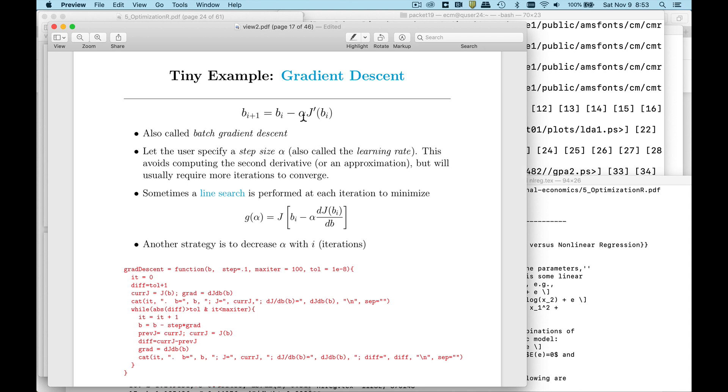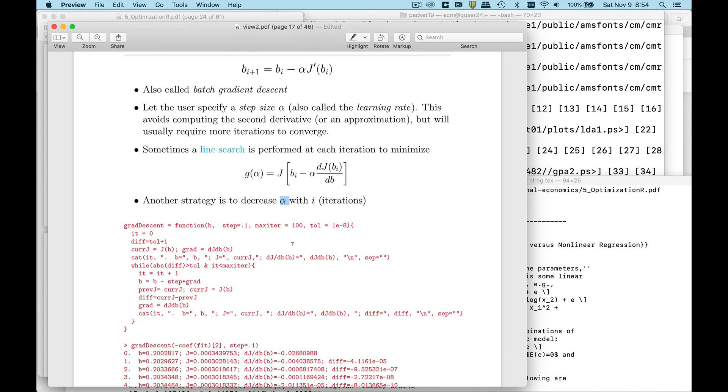Instead of us just specifying some alpha, sometimes we'll do a line search. The way to think about this is we're going to try a bunch of different alpha values, so we'll take a small step, a medium-sized step, a big step and we'll find out which one of those gives us the smallest value of j. So whichever of those alpha values at this current step gives us the best value of j is the one we're going to use. Another thing that sometimes is done is to have alpha decrease as the iteration counter gets bigger, so you want to take big step sizes at first and have that step size decrease. I'm not going to implement either the line search or this decreasing alpha in my simple algorithm, I just mention them to you for completeness.